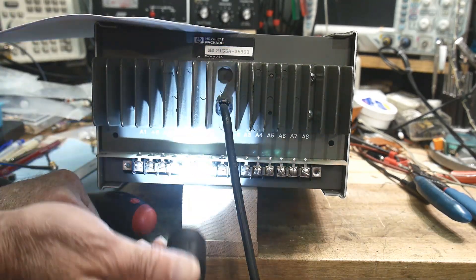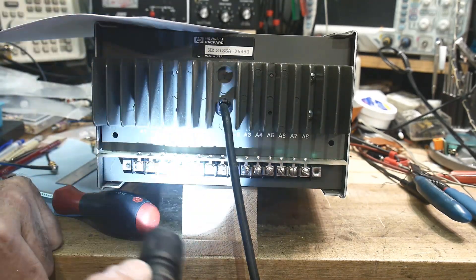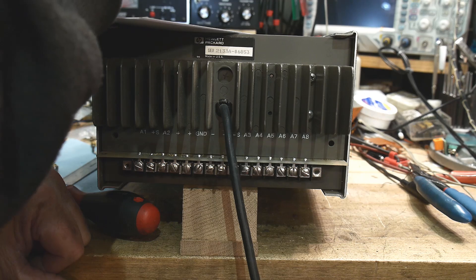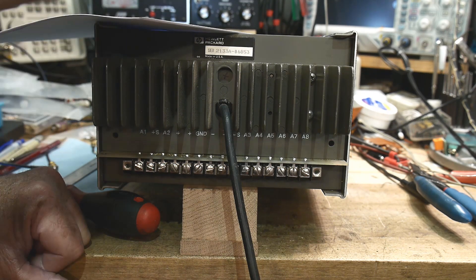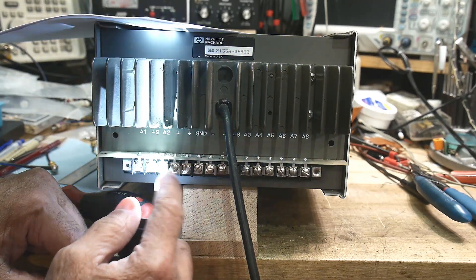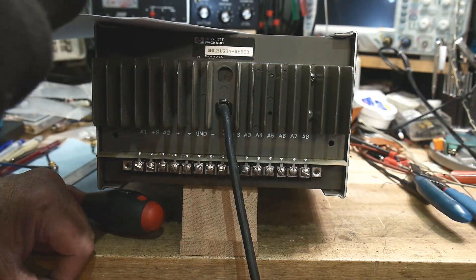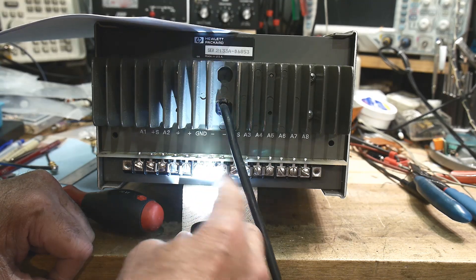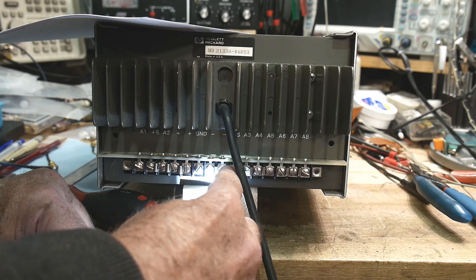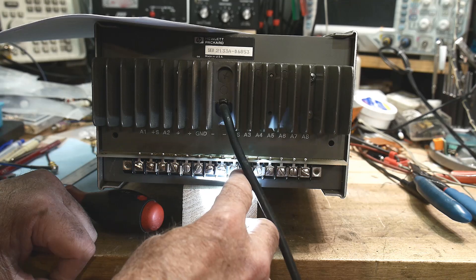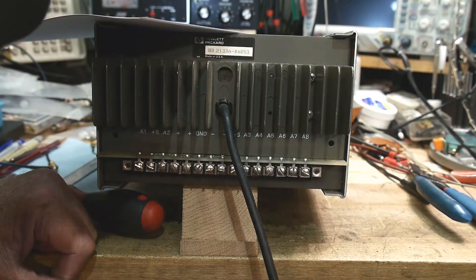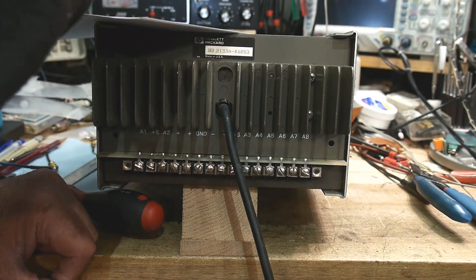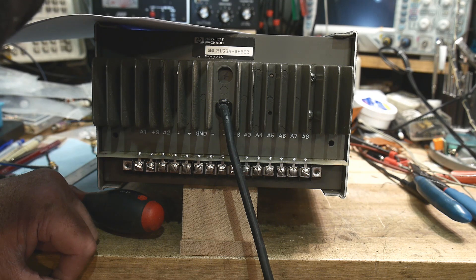There should be a jumper from here to here. I didn't see them. Plus S A2 plus plus should all be shorted together. Minus minus minus, these guys should be shorted together and they are. These three should be shorted together. What's that G for? That might just be ground. That might just be earth ground connected to the plus side.